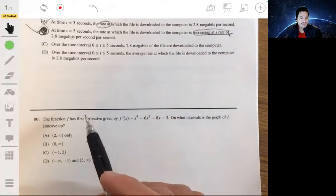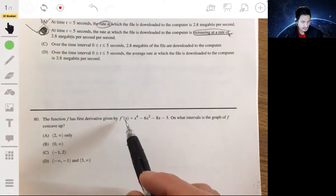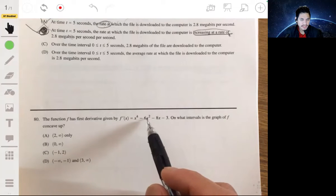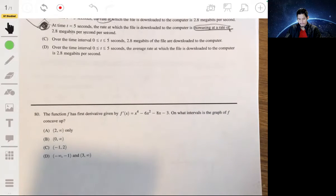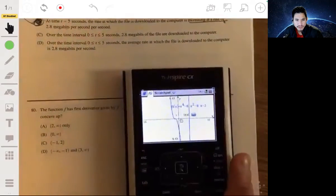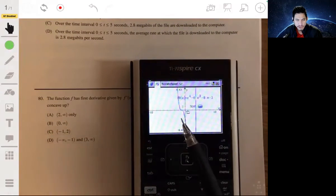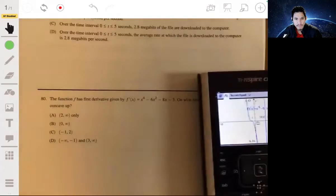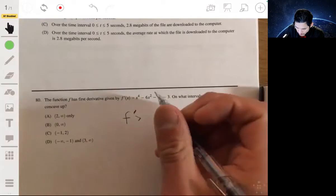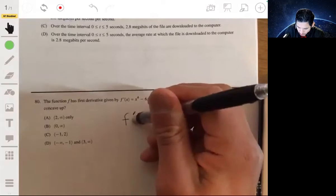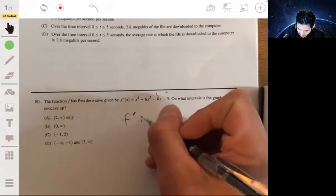All right, 80. The function f has first derivative given by f prime of x equal to x to the fourth minus 6x squared minus 8x minus 3. On what intervals is the graph of f concave up? So let's just go ahead and graph this guy, give you a visual. All right, so using technology, here's my graph of f prime. So this is f prime, this is not f. So it will be concave up when f prime is increasing. F prime has to be increasing.